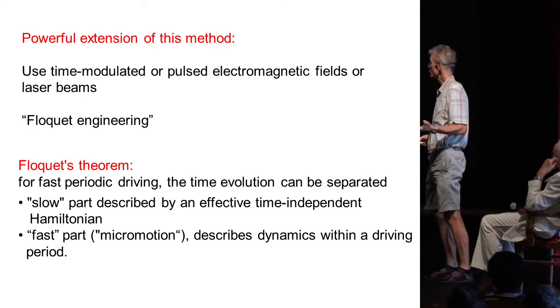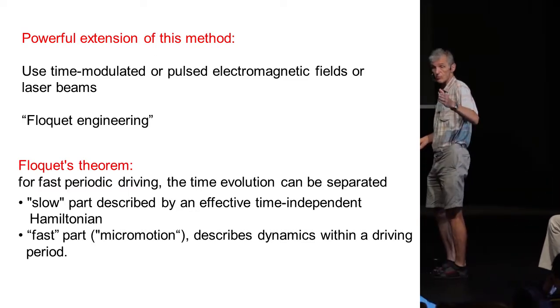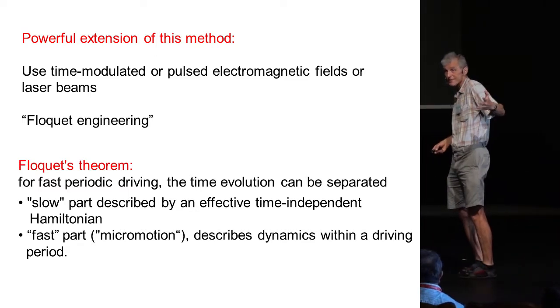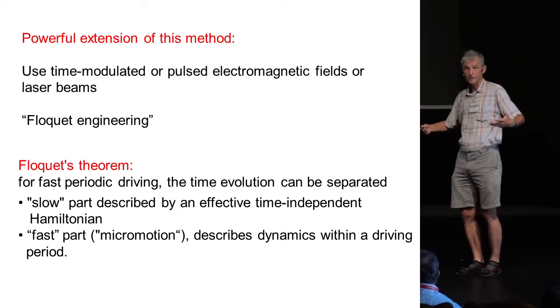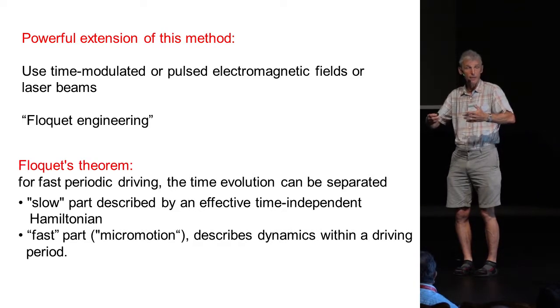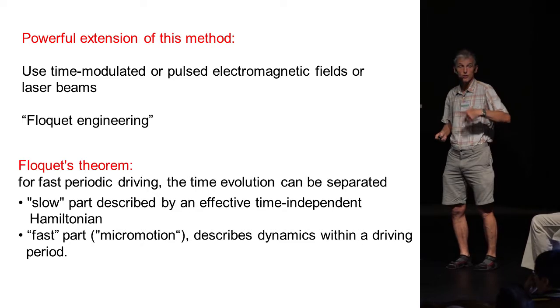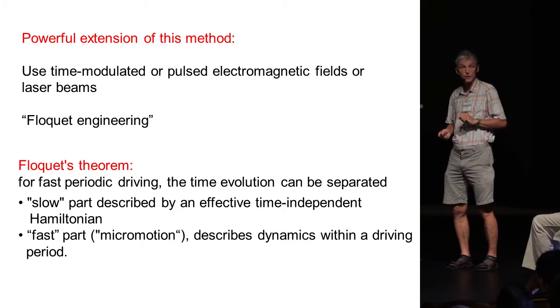If you have a rapid modulation you can often separate the full time evolution of the system into a fast part which is the micromotion and often we're not interested in that, but then there is a slow part, often an averaging over the rapid modulation and it is this slow part or secular motion which is an effective Hamiltonian we try to create.